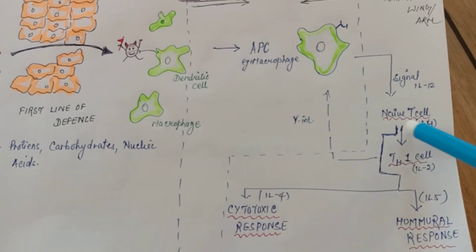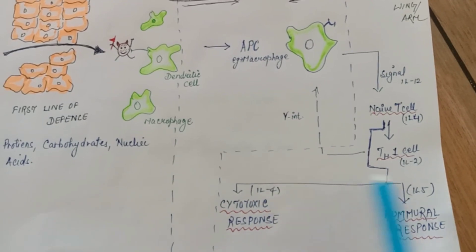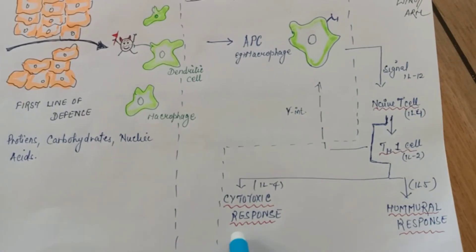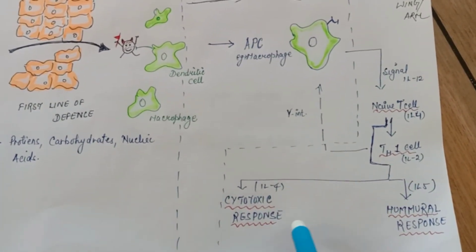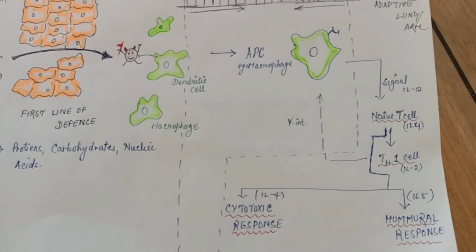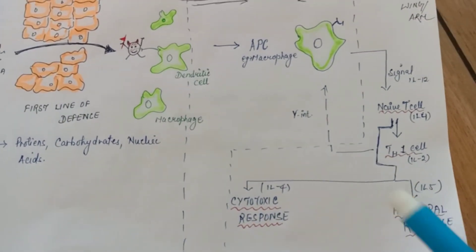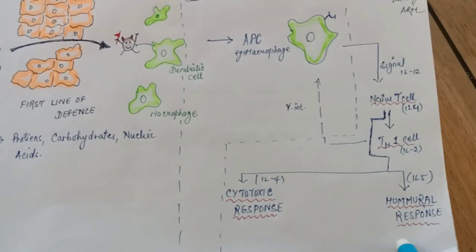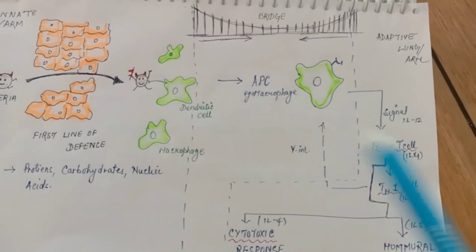They'll activate two paths. Certain interleukins maybe interleukin 4 or interleukin 5. Two kinds of responses will generate: one is cytotoxic response, certain types of enzymes or perforins, this is killing kind of mechanism, and this is humoral response. They'll secrete antibodies. Humoral response and cytotoxic response two things will happen.